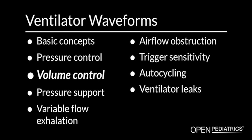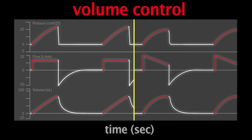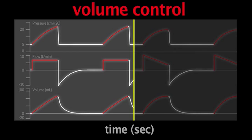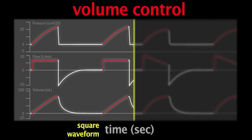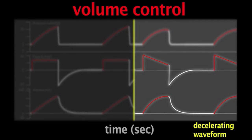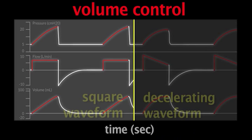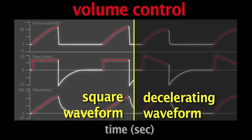Volume control. Now I'm going to talk about what a normal volume control waveform looks like. There are a couple of different ones — the most typical are represented here. On the left part of the waveform we have what we call a square waveform. Because we are controlling inspiratory flow in volume control, this has a very box-like structure. The other type is a decelerating wave flow pattern, which looks a bit more like pressure control but is still quite controlled. There is no real difference in benefit between these two; it depends on your ventilator and your preference.